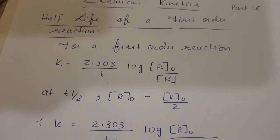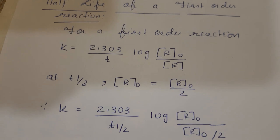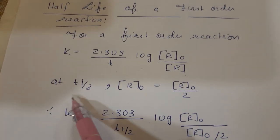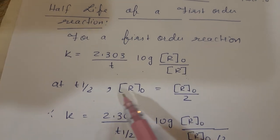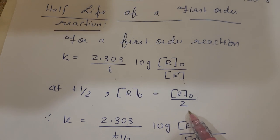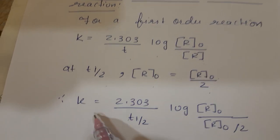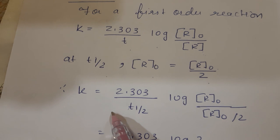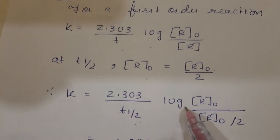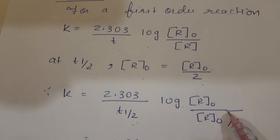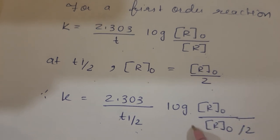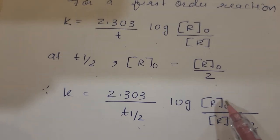So at t half, the original concentration becomes R₀ upon 2 - concentration has also become half. Therefore k equals 2.303 upon t half log R₀ upon R₀ upon 2. When concentration becomes half, you know the 2 will go up.